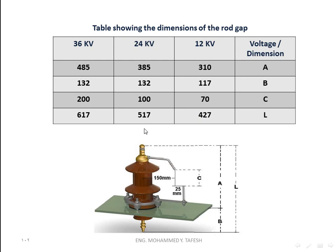Each voltage level has different rod gap dimensions. When our system is working on 36 kilovolts, the dimensions are different from those at 24 kilovolts and different from 12 kilovolts.